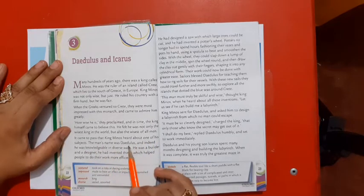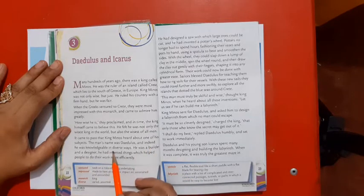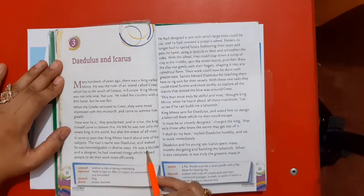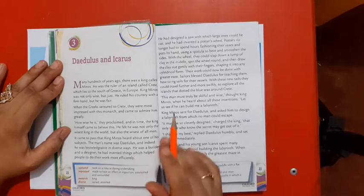The man's name was Daedalus and indeed he was knowledgeable in diverse ways. He was a builder and a designer. He had invented things which helped people to do their work more efficiently.